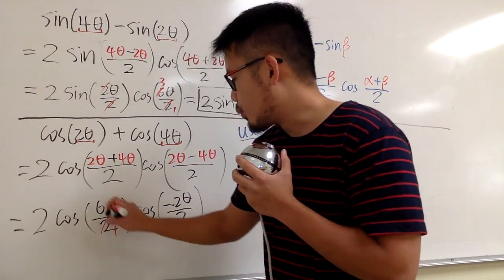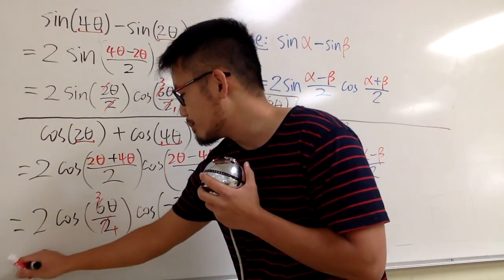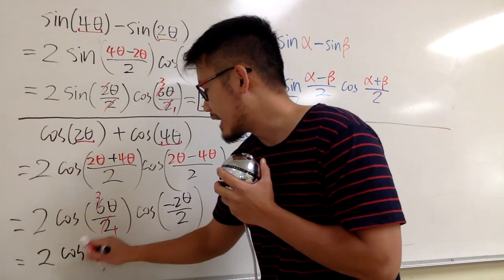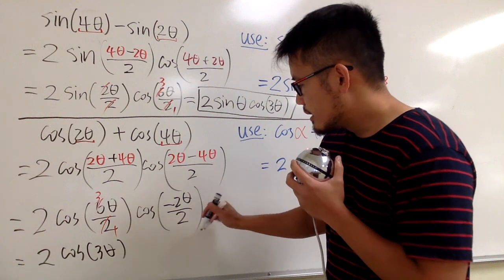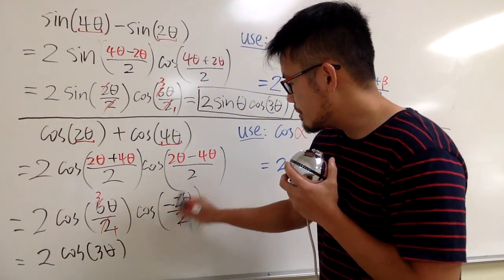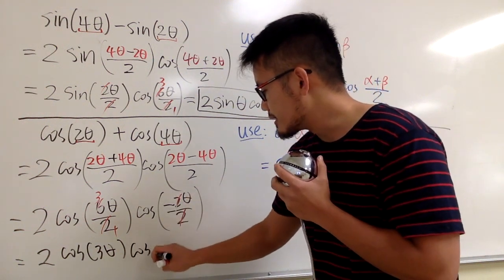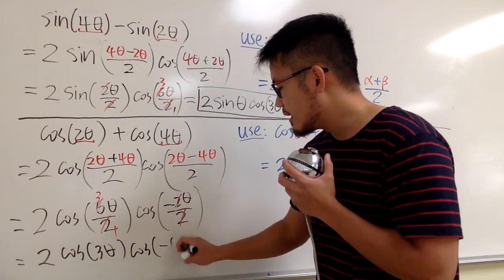All right. Simplify this. This is 1, this is 3. So the first one is going to be 2 cosine, and we have 3 theta inside. And 2 and 2 can be cancelled. And we have cosine of negative theta.